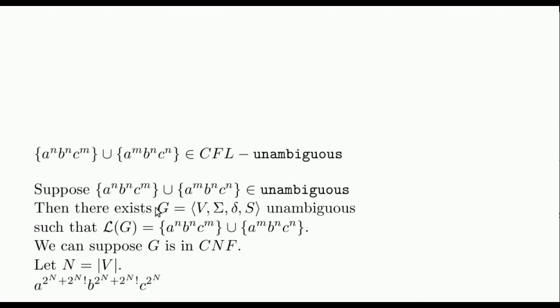We proceed by contradiction supposing the existence of an unambiguous grammar G that generates it. Without loss of generality, we can assume that G is in Chomsky normal form, since we have already seen in this course that the transformation to Chomsky normal form preserves the unambiguity.